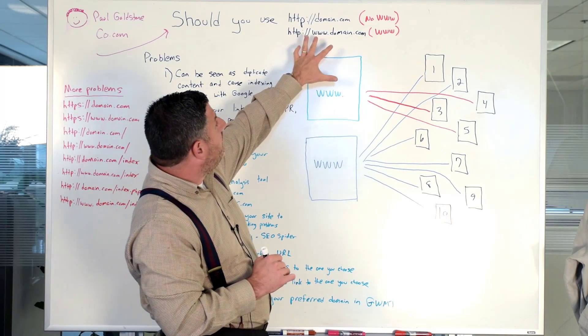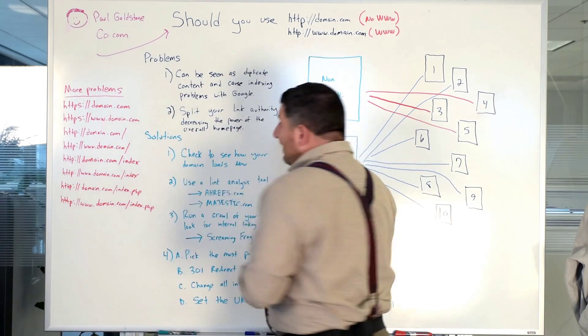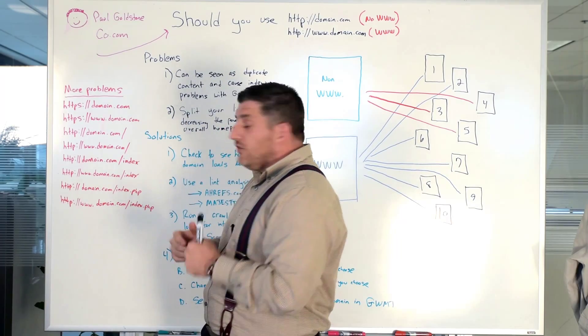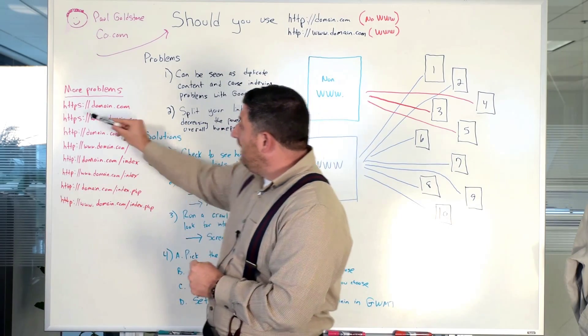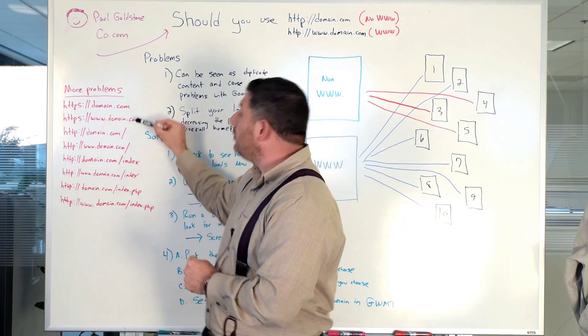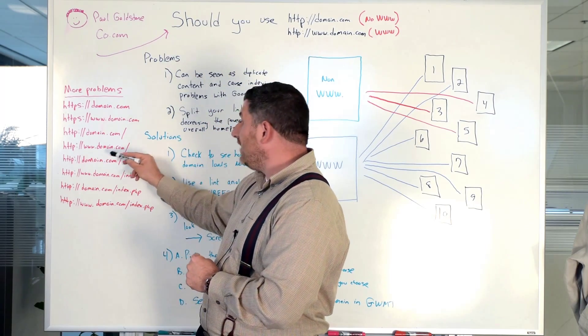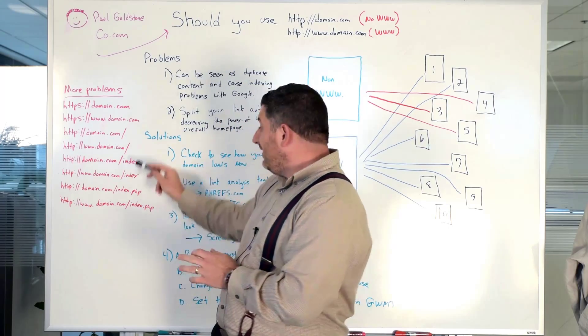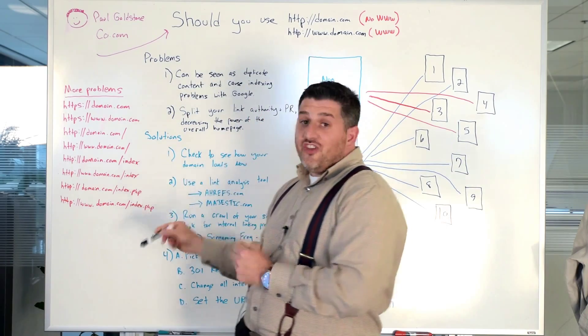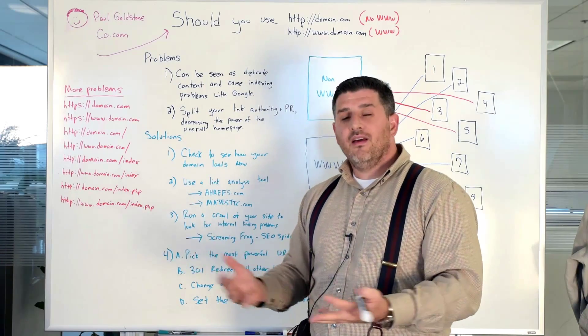A lot of times people ask, should I use the non-www or the www version? But that's not just it because there's also more problems. Like for example, if you have a secure website, you might have https domain.com and then https www domain.com and you might have another version, domain.com with the forward slash and then www domain.com forward slash, then one with an index.php. So there can be 15, 20 different versions of your homepage at once and you might not even know it. And how does that happen?